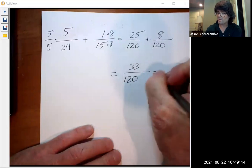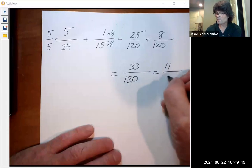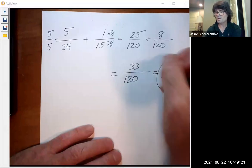3 goes into 33 eleven times, so that's 11. 3 goes into this 40 times, so finally it's 11 over 40.